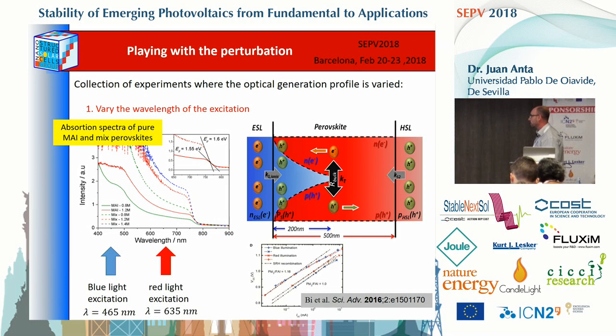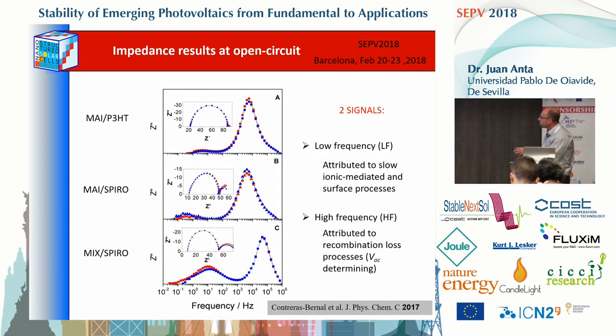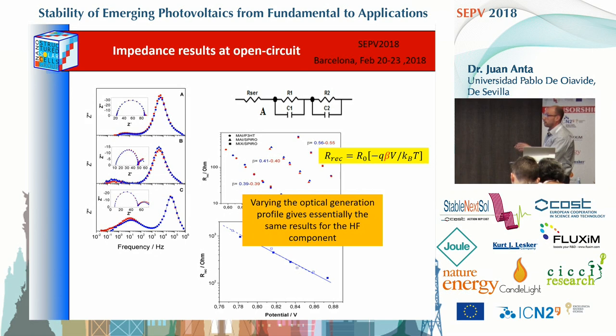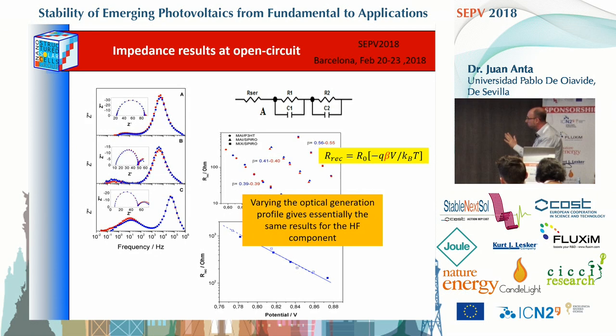We have done experiments for many different configurations. For fresh, well-performing perovskite solar cells, the impedance spectra obtained under red and blue light are basically the same. One thing you can do with impedance spectroscopy is fit your results to an equivalent circuit. The simplest choice is two RC elements in series, producing two time constants in the spectrum. By fitting to this equivalent circuit you can extract a low-frequency and a high-frequency recombination resistance, and corresponding capacitances.